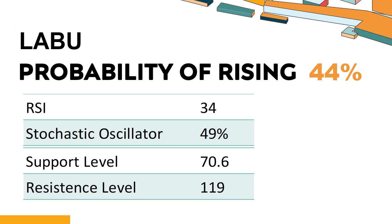The current stochastic oscillator of LABU is 49%. This indicates that the stock is experiencing a strong downtrend and strong selling pressure. An oversold signal may indicate that a stock is hitting a temporary bottom, but it doesn't necessarily mean that the trend will reverse immediately.